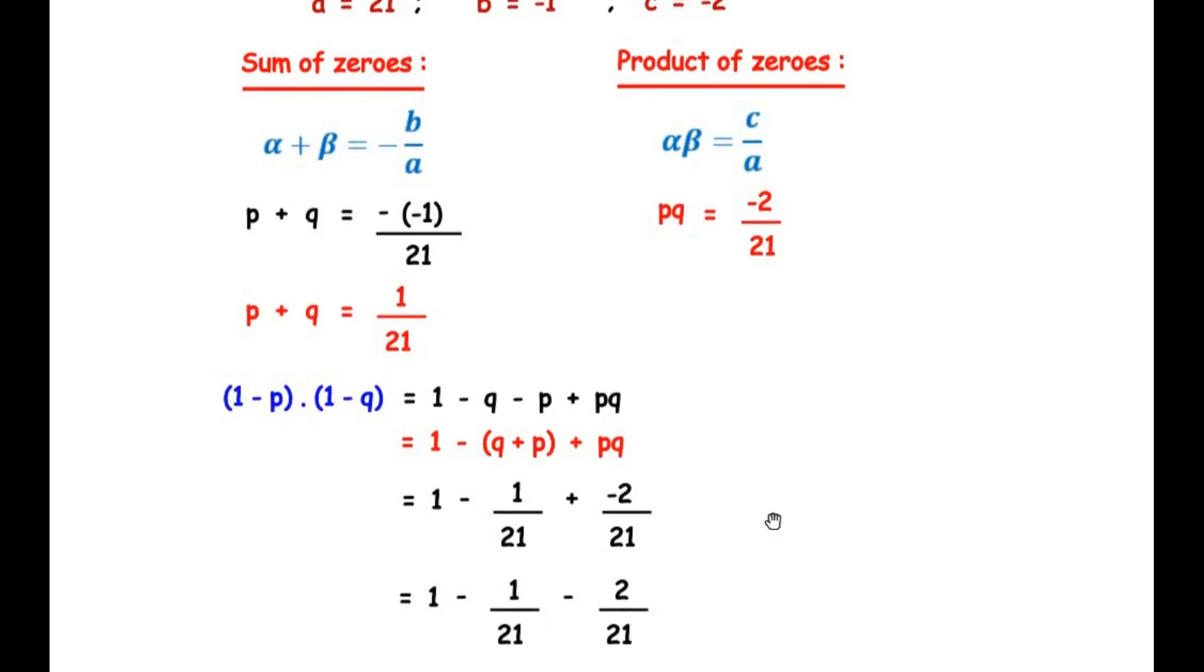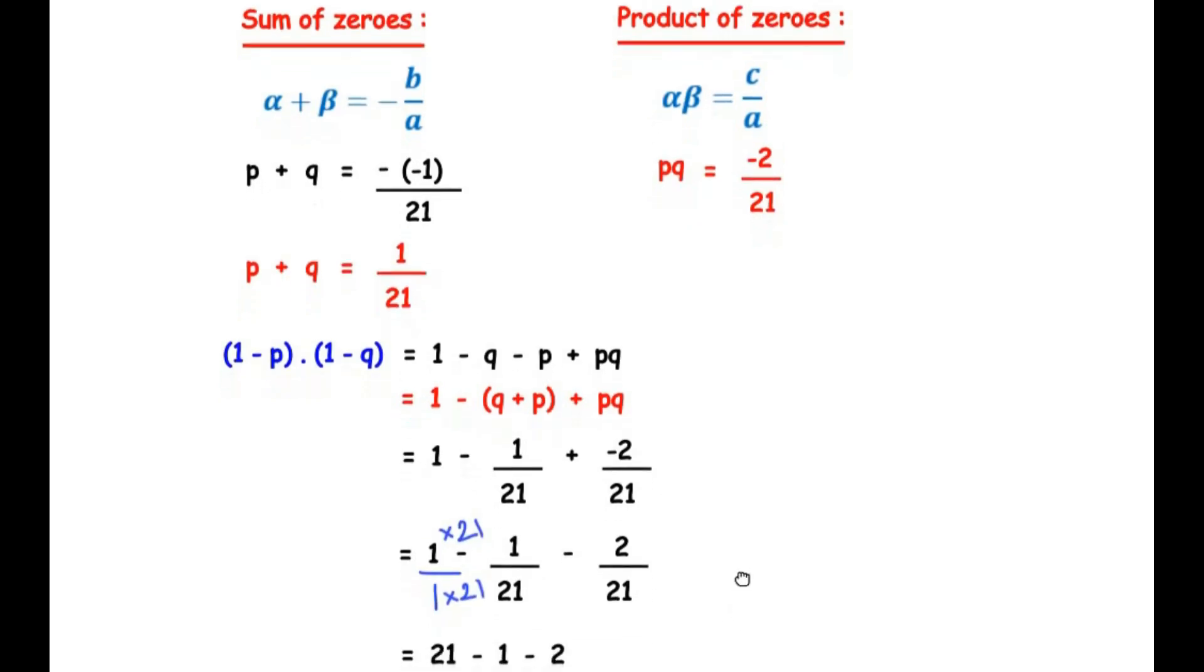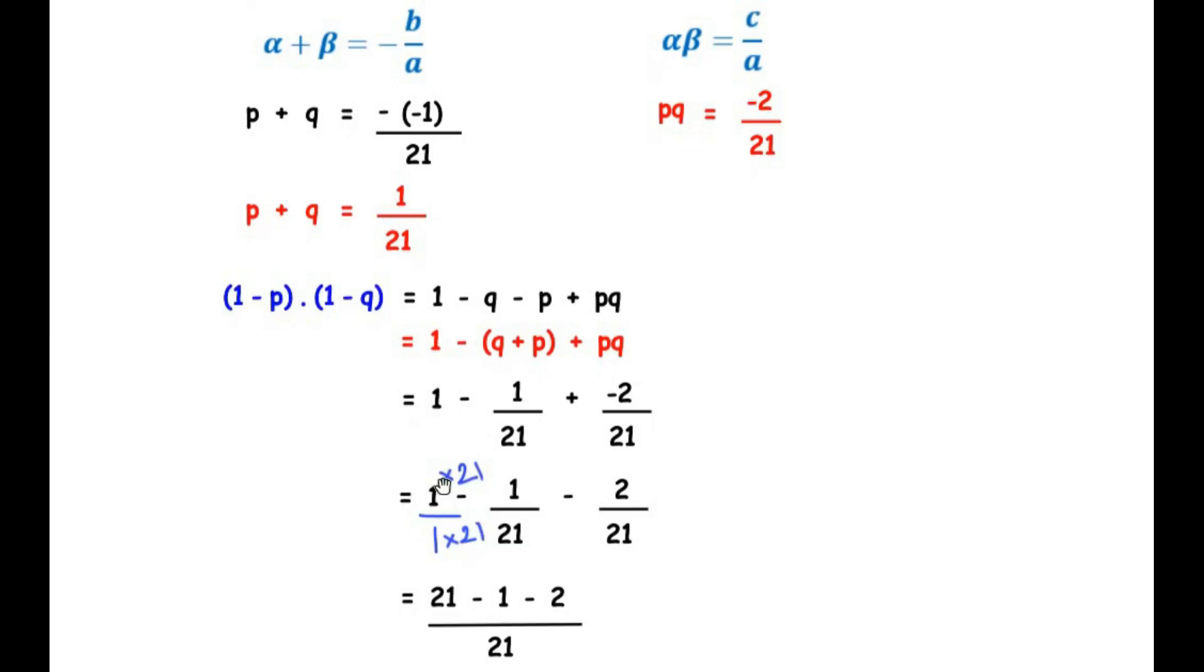Now since the denominator is 21 let us try to get the LCM. So here 1 does not have a denominator so let us take it as 1/1. We are going to multiply the numerator and denominator by 21. This simplifies as (21 - 1 - 2)/21. Now let us simplify this. 21 - 1 is 20 and 20 - 2 is 18.